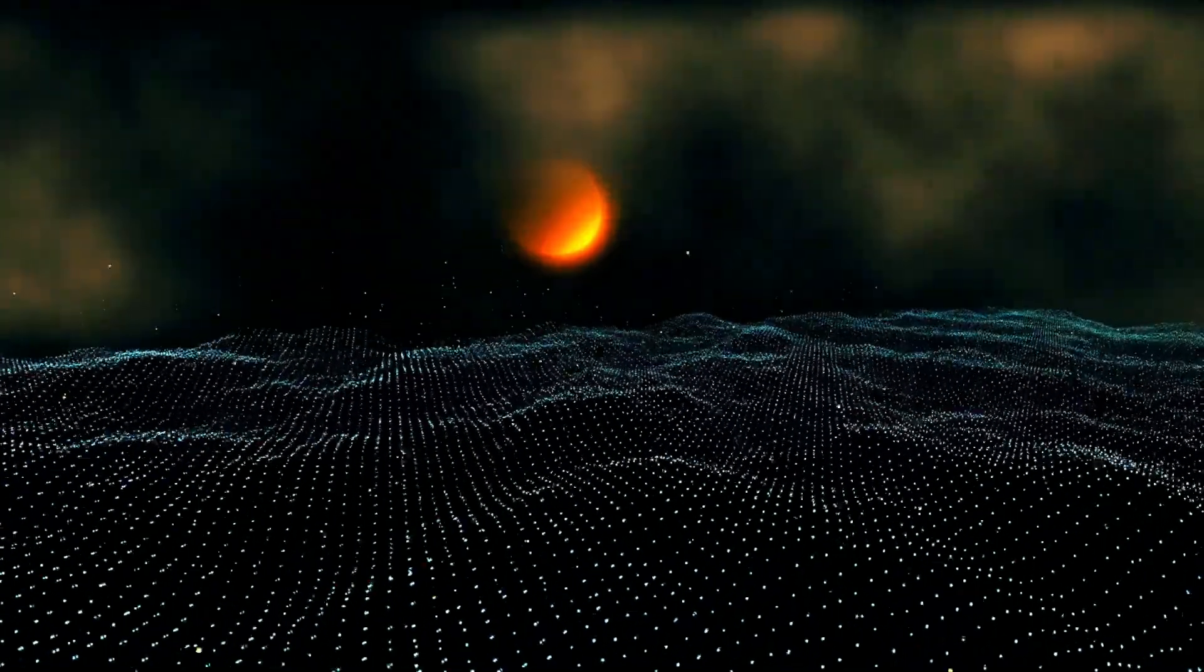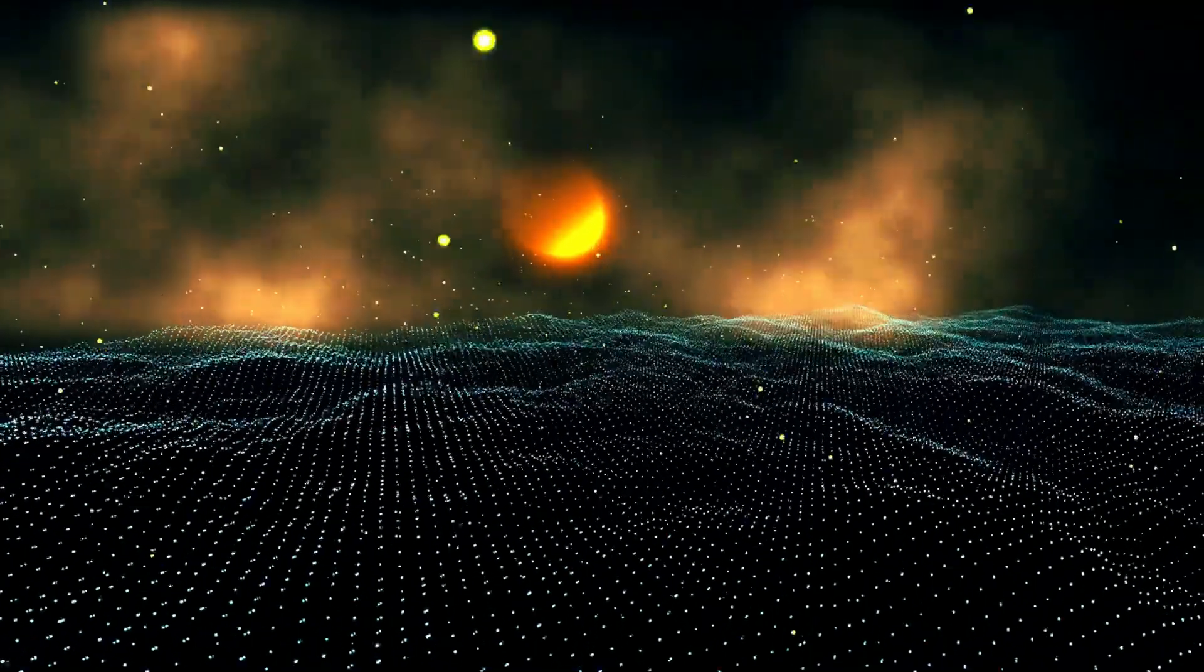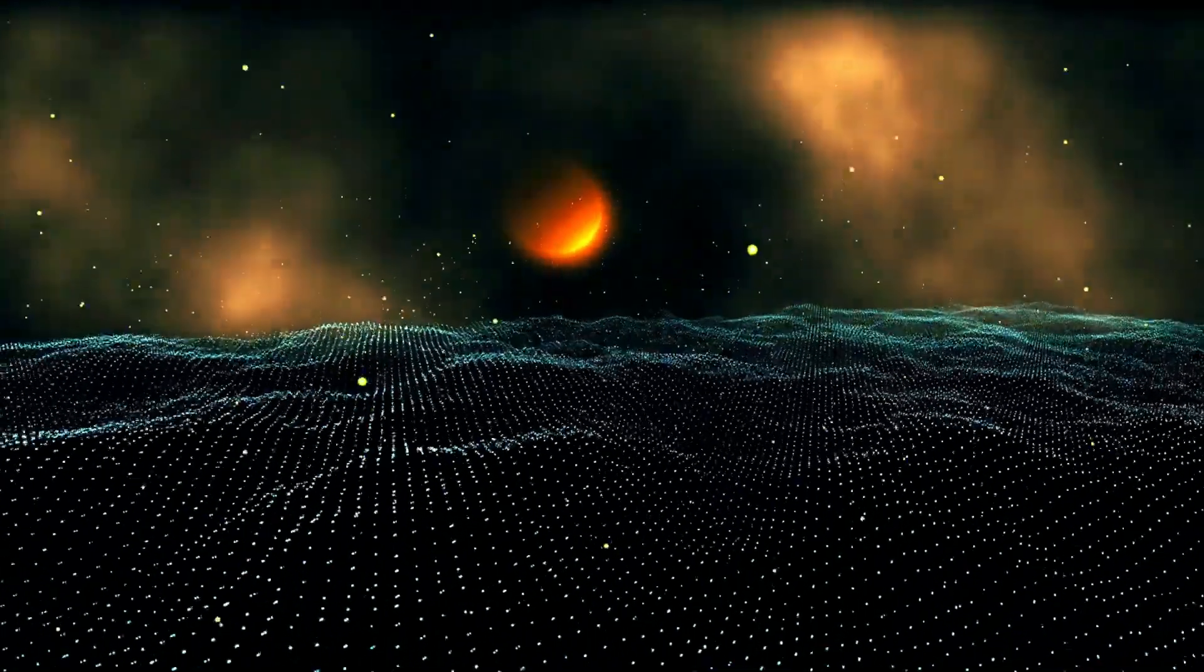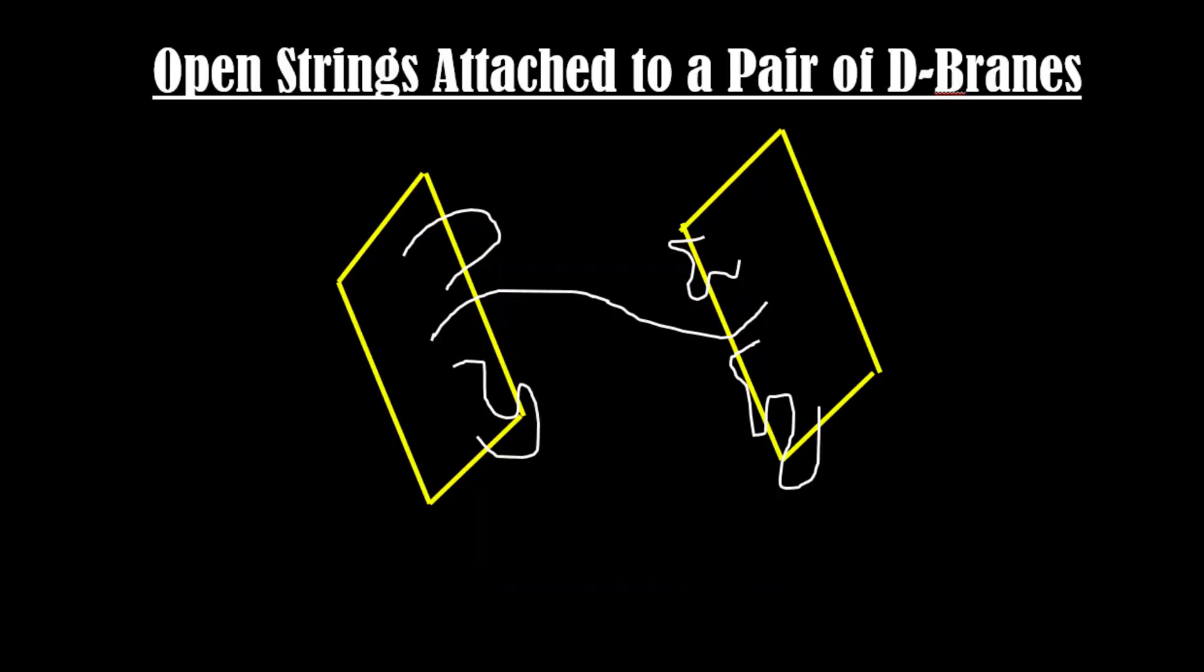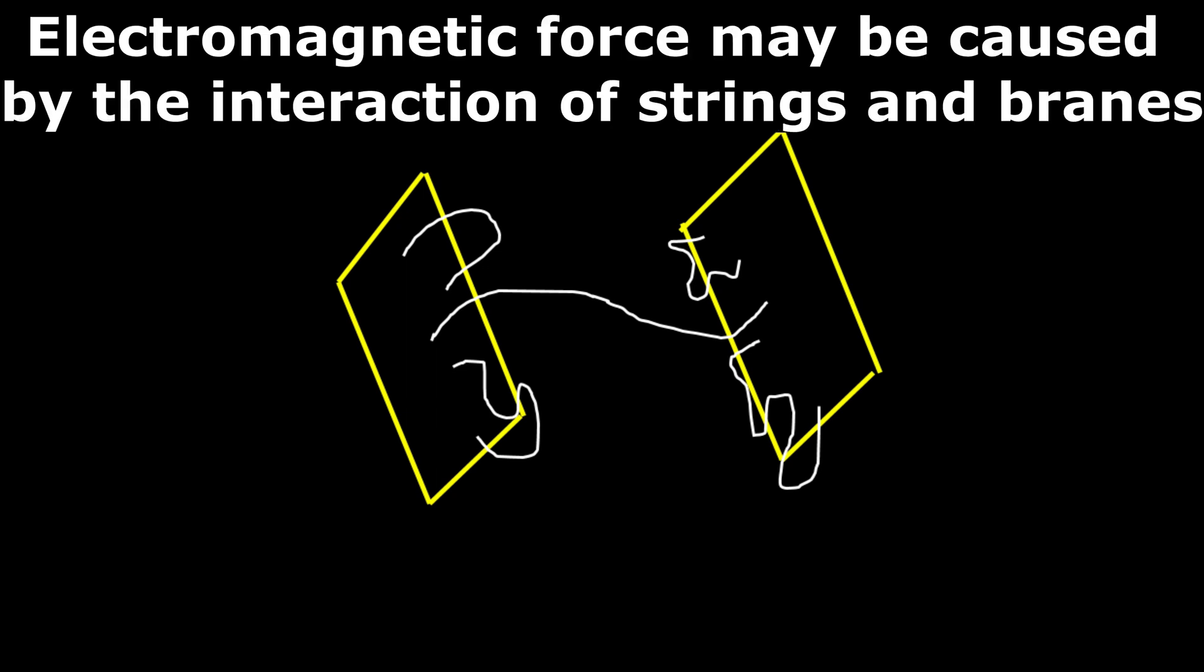These brains are thought to be the fundamental building blocks of the universe, with particles and other forms of matter being composed of these objects. Brains can interact with each other and their interactions are thought to be responsible for the fundamental forces of nature. For example, the electromagnetic force may be caused by the interaction of strings and brains.